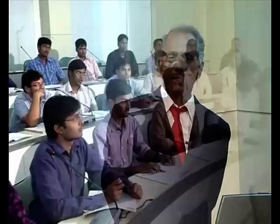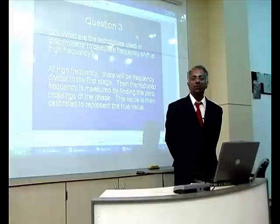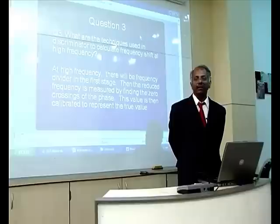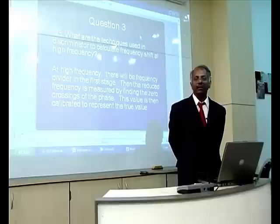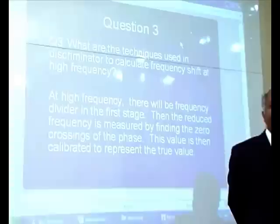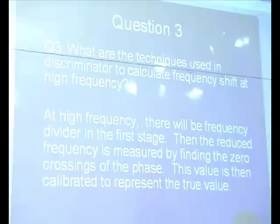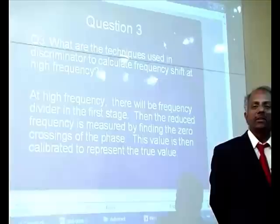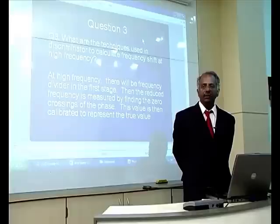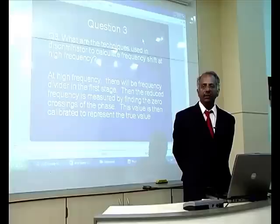Q: What techniques are used in the discriminator to calculate frequency shift at high frequencies? A discriminator identifies the frequency of the input signal. If the input frequency is very high, a frequency divider is used first to reduce it, enabling accurate measurement of zero crossings. A chain of 2 or 3 frequency dividers brings the frequency down to an acceptable value, then it is measured and calibrated back based on the number of divisions applied.